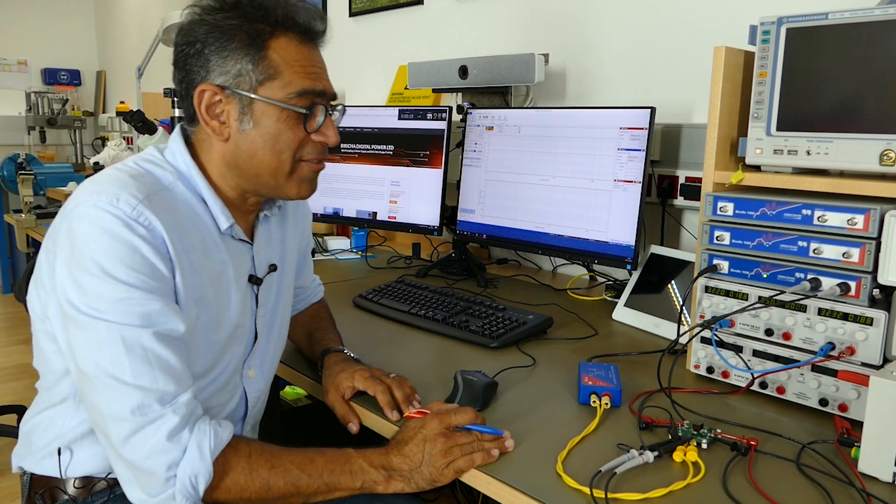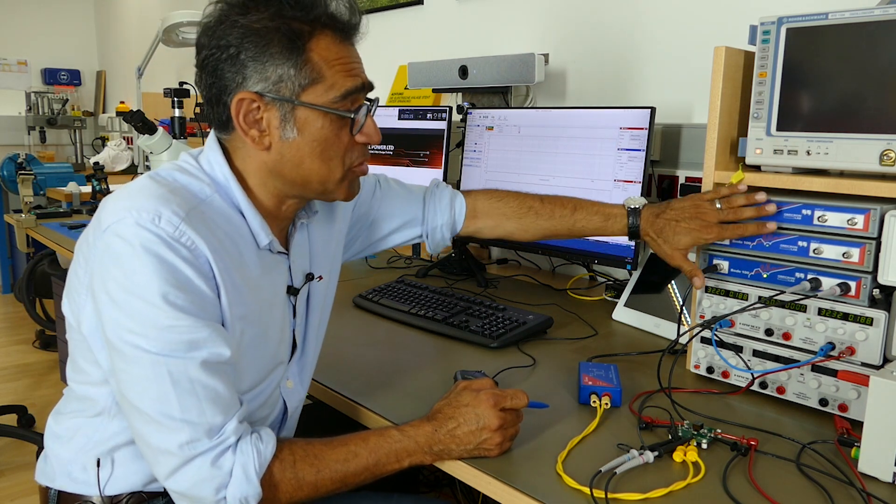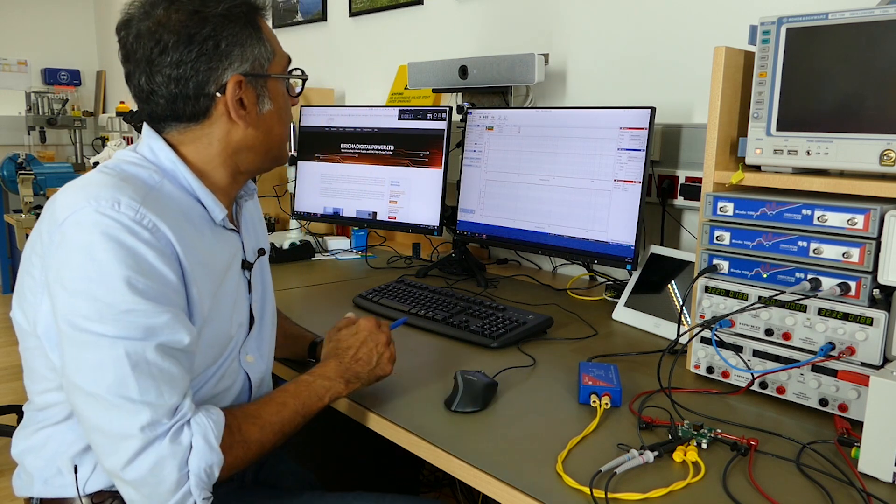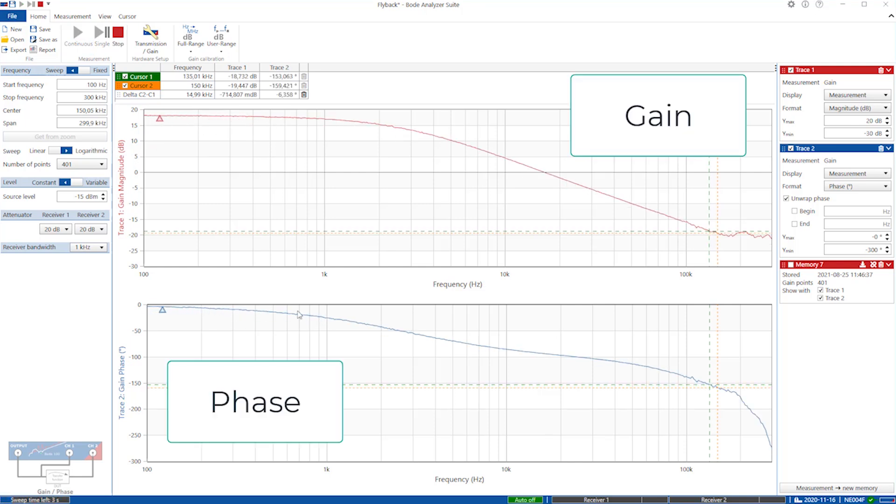Okay, so here I've got my test setup. I have got a flyback converter here. I am measuring its frequency response with the Bode 100, and here we've got the Bode analyzer switch. So if I start measuring, you will see that is my gain plot and this is my phase plot.